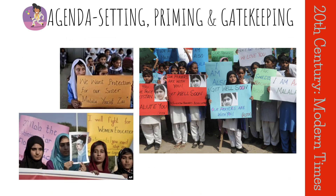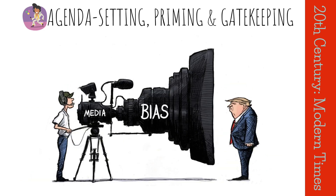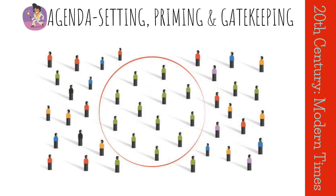The media can also use bias to influence our thoughts and opinions. Bias is the way in which the media presents information in a way that favors one side of an issue over another. Bias can be intentional or unintentional, but it can still have a significant impact on how people think about an issue.